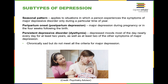Next is peripartum onset or postpartum depression — whenever individuals experience major depression during pregnancy or in the first four weeks following birth. There's also dysthymia, or persistent depressive disorder, where individuals have a depressed mood for most of the day, nearly every day, for at least two years, plus at least two other symptoms of major depression. The key difference between dysthymia and MDD is that these individuals are chronically sad but do not meet all the criteria for major depression — two symptoms versus the full number required for MDD.